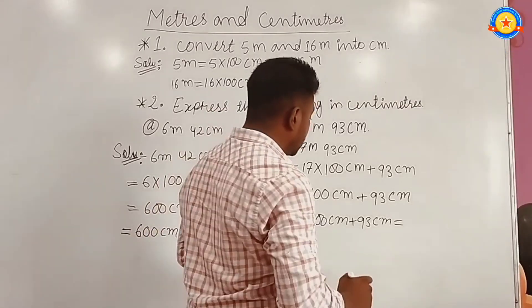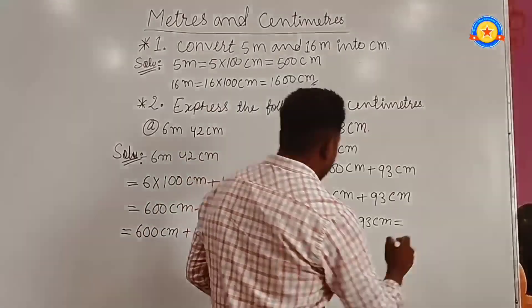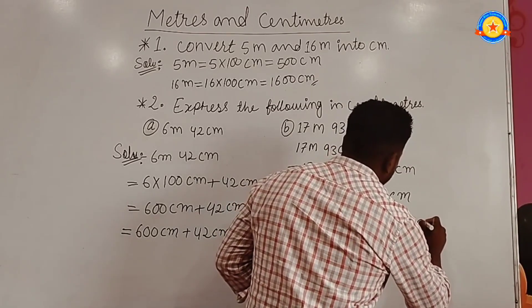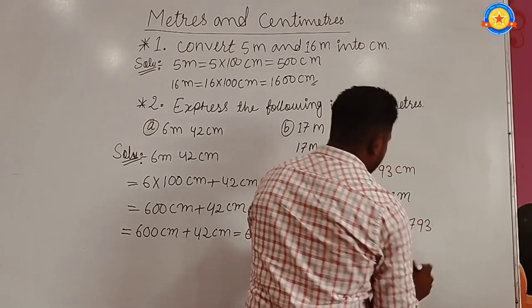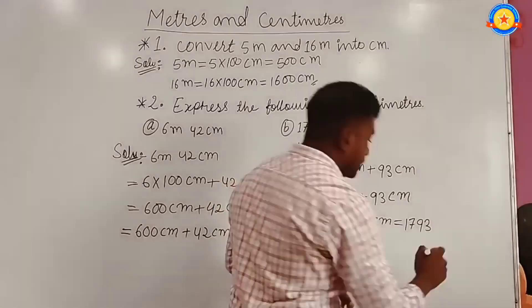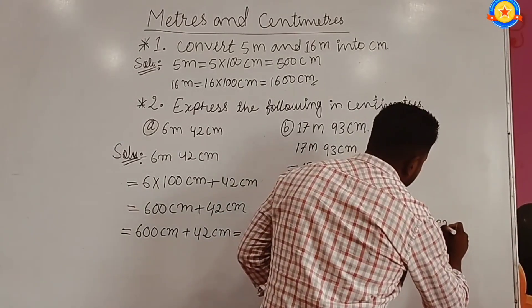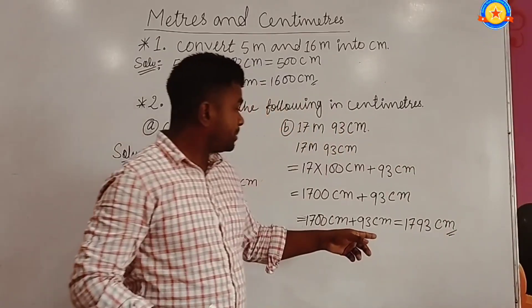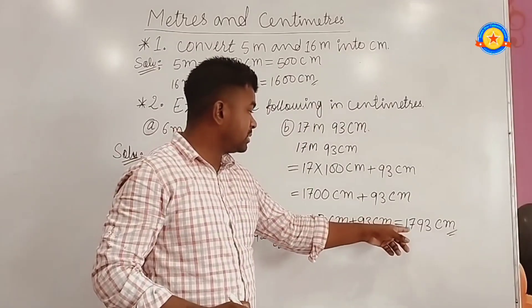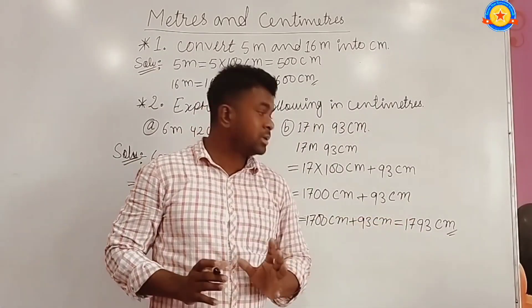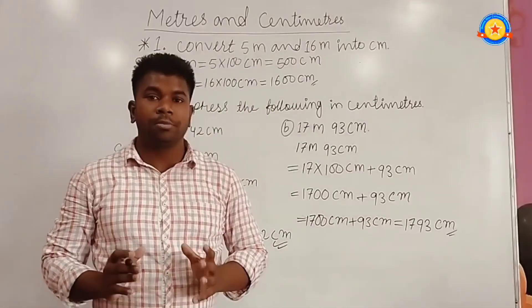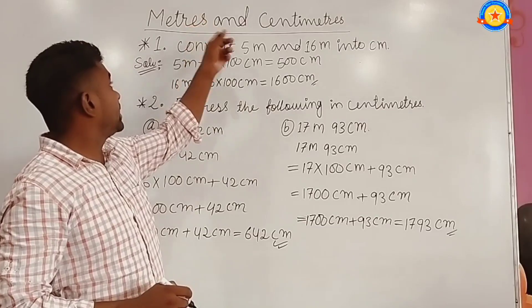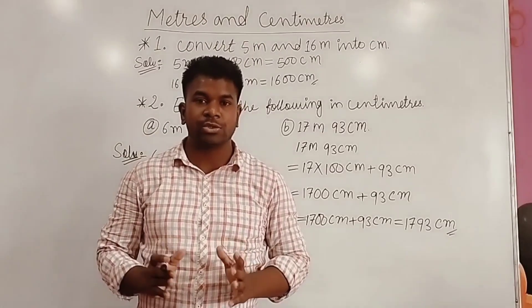So we write here 1793 cm. This is the answer: 1793 cm. Hope you all understood the concept of meters and centimeters. Thank you.